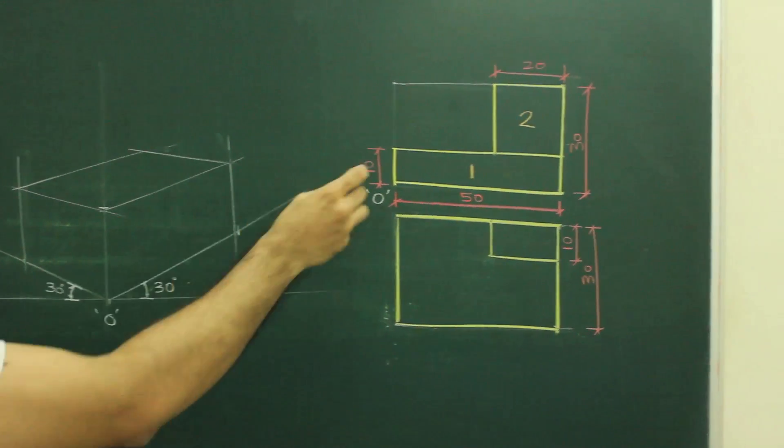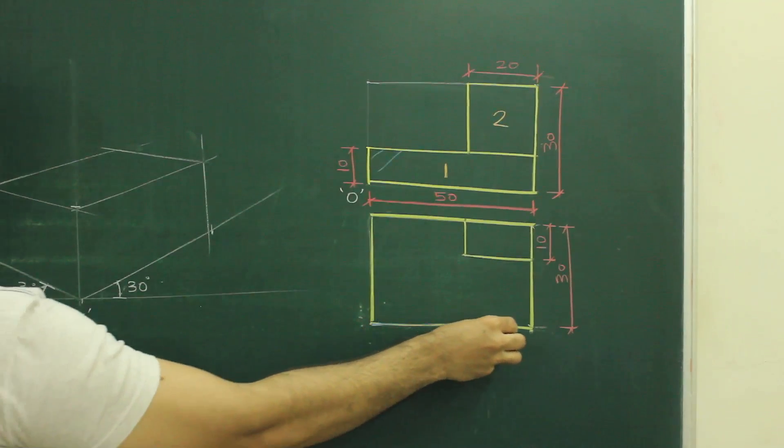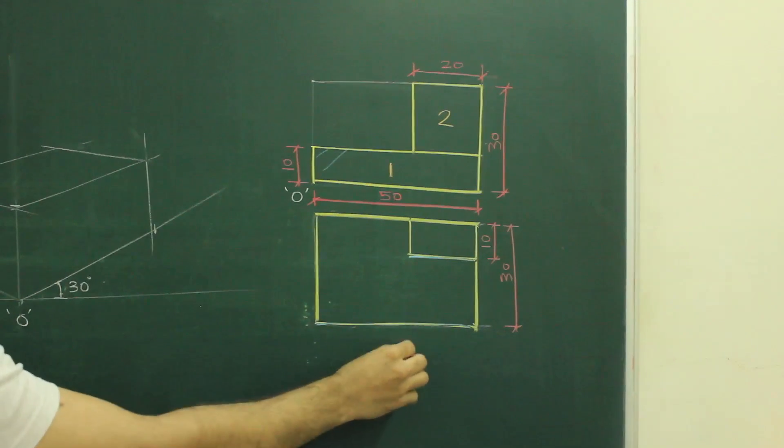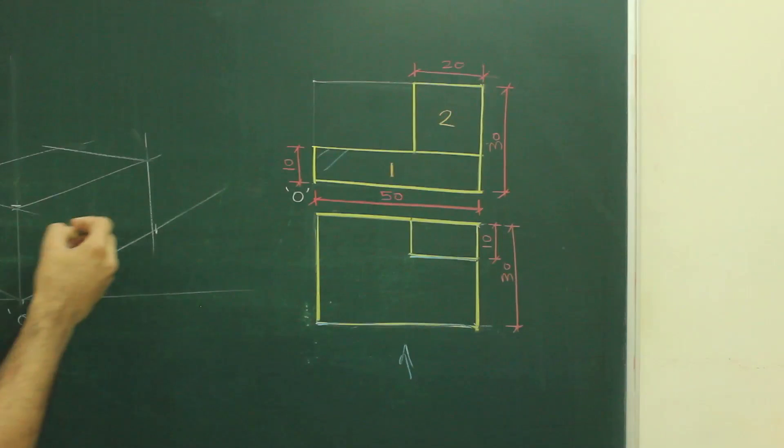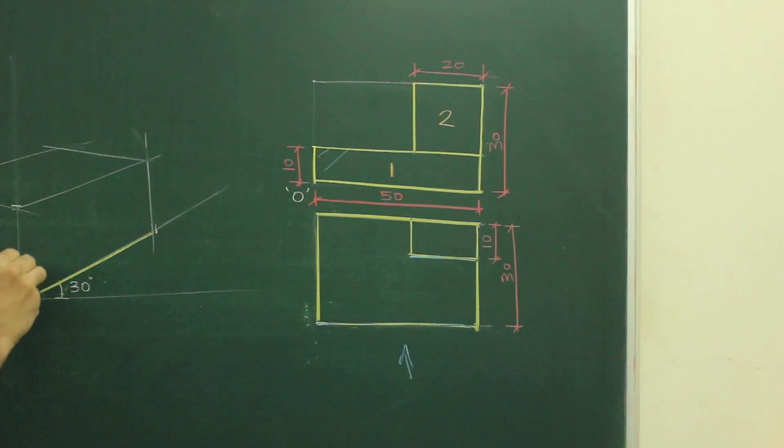Now if you see this part 1, in top view this part 1 is here and part 2 is here. So of course, if you see from this side, this part 1 is nearer to the observer. So first we will draw part 1, that is 50 by 10. So we will draw 50 by 10.